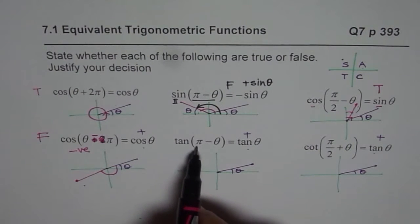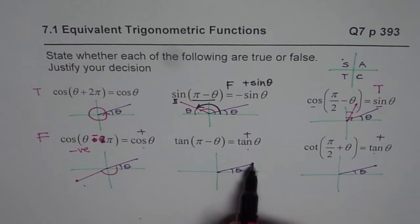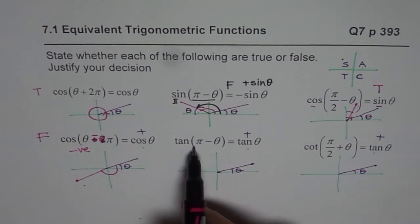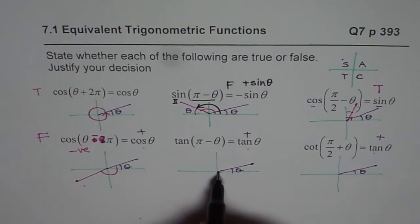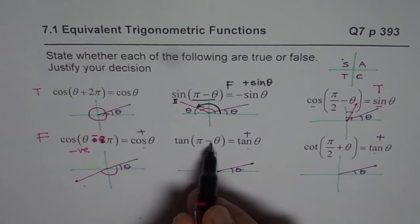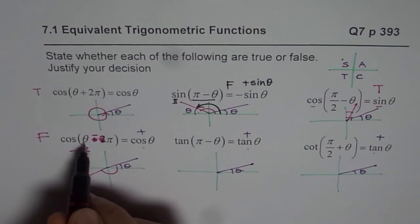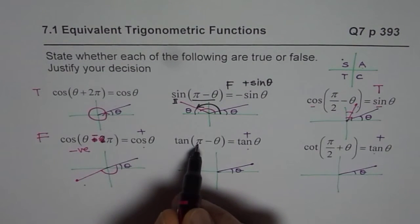Next one, you can take a hint from here. Tan(π - θ). That is tan θ, which is positive. π - θ means from π, you have to take away theta. It is not θ - π. π - θ.